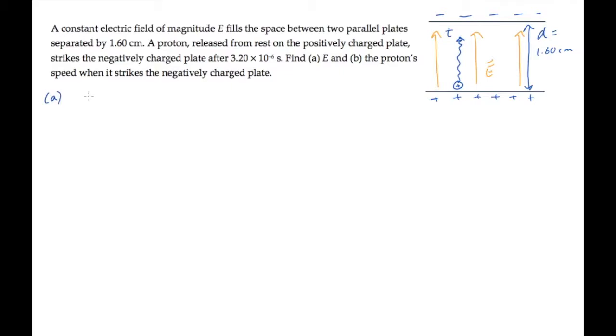We're asked to find the electric field magnitude E. The force on the proton is in the upward direction, with magnitude equal to its charge times the electric field magnitude. That's constant, so the acceleration will be constant, and we can use this kinematic equation to solve for the acceleration. The proton starts from rest and travels a distance d, so the acceleration is 2d over t squared.